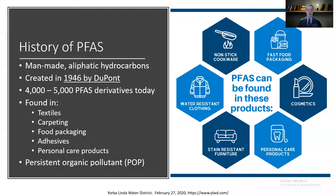We're going to start with a general overview of what PFAS is. They are man-made, aliphatic hydrocarbons where either some or all the hydrogens have been replaced with fluorines. They were first created in 1946 by DuPont, and today there are around 4,000 to 5,000 different PFAS derivatives that exist.